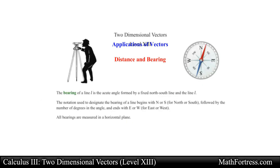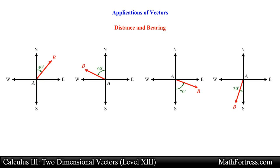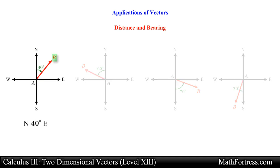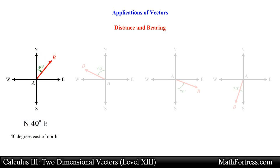For example, the following bearings would be denoted as follows. The bearing of point B from A would be pronounced as 40 degrees east of north. Notice that we start on the line that faces north and then move 40 degrees towards the east.